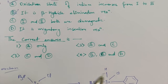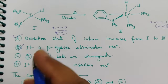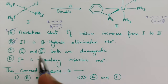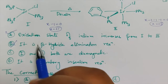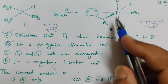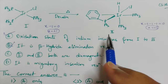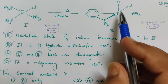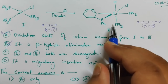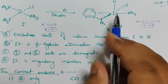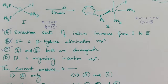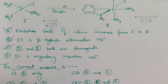Statement C says both species are diamagnetic. The first complex is square planar and the second is octahedral. Draw the d-orbital splitting for both and fill in the valence electrons. Since iridium is a 5d metal — not a 3d metal — it forms low spin complexes, and low spin complexes are generally diamagnetic in nature. So statement C is correct.